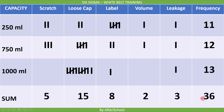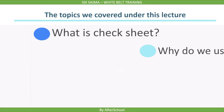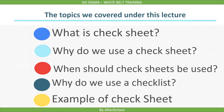This is how a check sheet works, and by looking at it we can easily get the complete picture of the defects — 36 defects in total. To summarize, we covered: what is a check sheet, why we use it, when it should be used, and a practical example. With this, the lecture ends. Thank you.